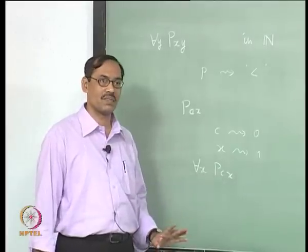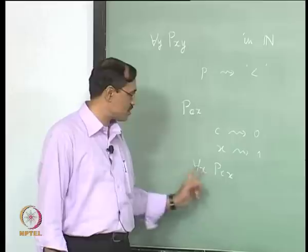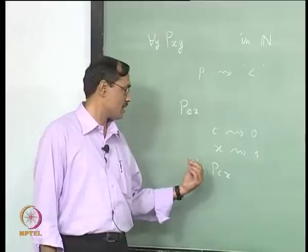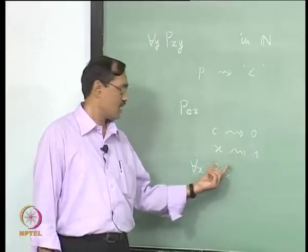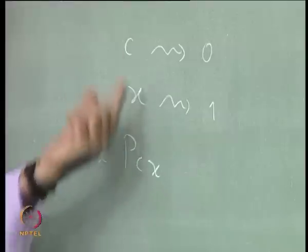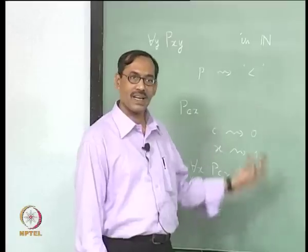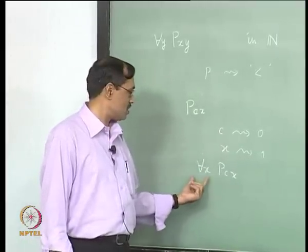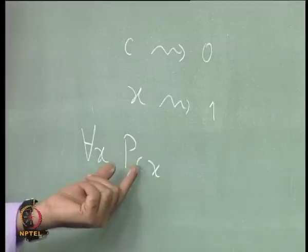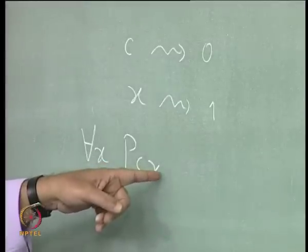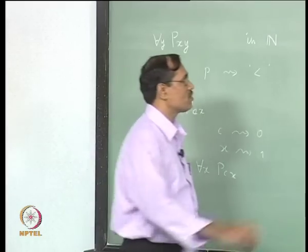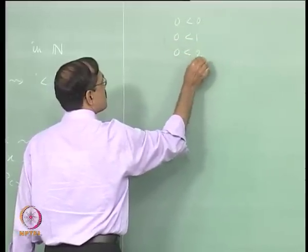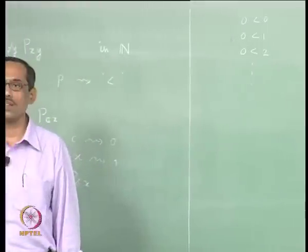Now, if you associate variables, consider the sentence 'for each x, P(c, x)'. You say x has been associated with 1, c has been associated with 0. So, this can be read as '0 less than 1'. Then what is 'for each x'? There is a problem again. How to associate this variable x and also interpret 'for each x, P(c, x)' — that is our problem now. The meaning of 'for each x' is: for every natural number, 0 is less than that number. That means all these sentences — 0 less than 0, 0 less than 1, 0 less than 2 — are there.